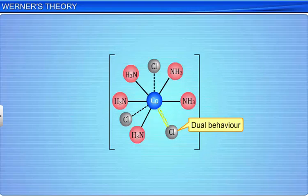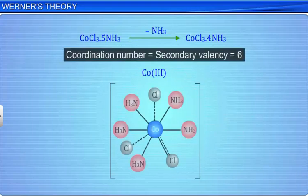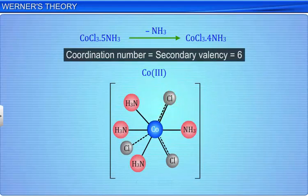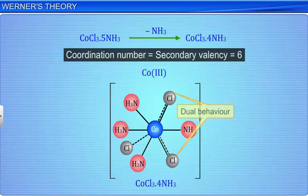Similarly, in CoCl3.4NH3, to satisfy the secondary valency of 6, 2 chloride ions assume dual behavior. In modern terms, the complex can be written as [Co(NH3)4Cl2]Cl.